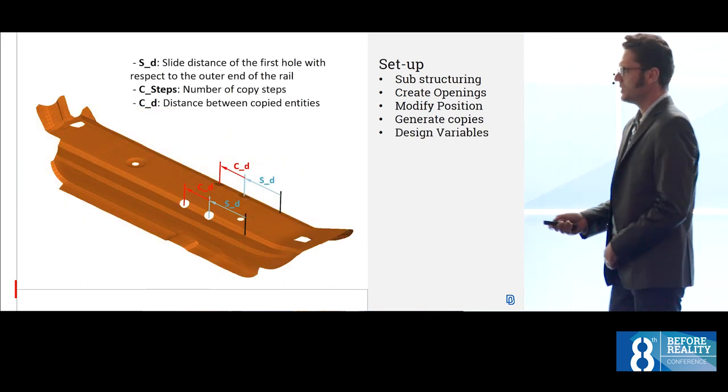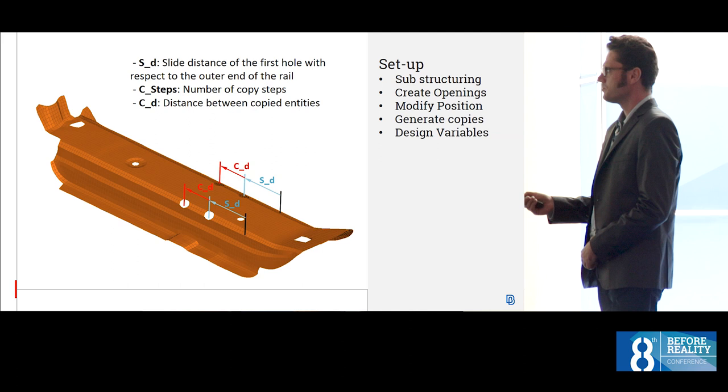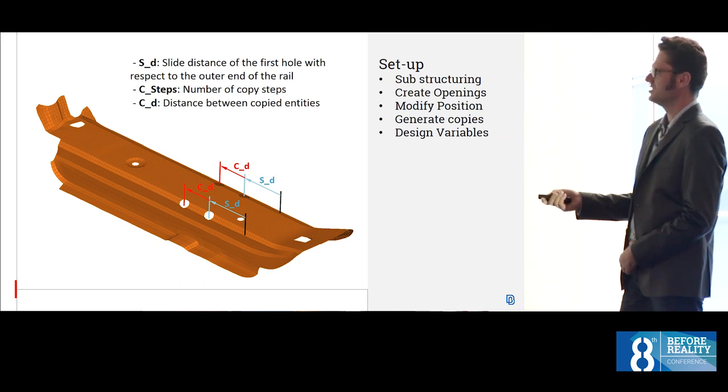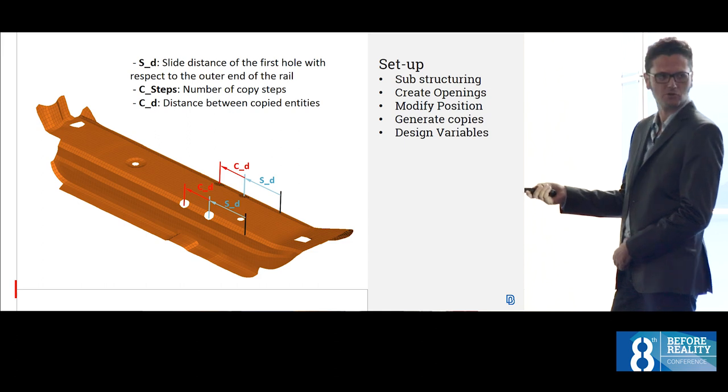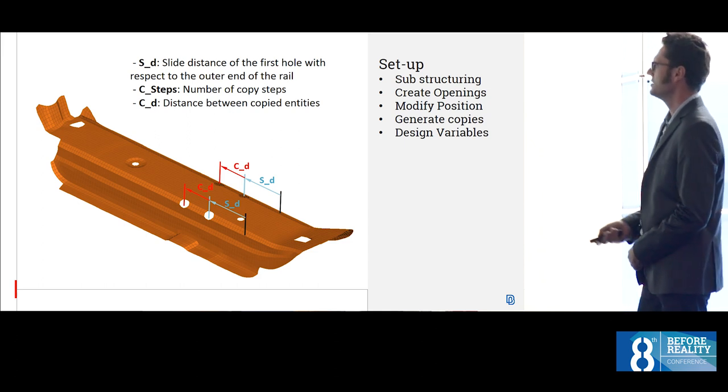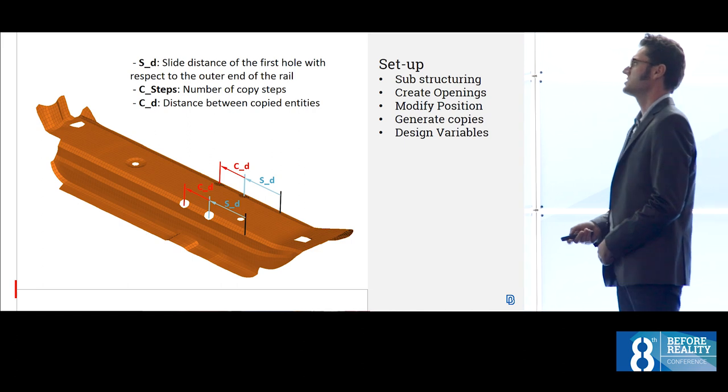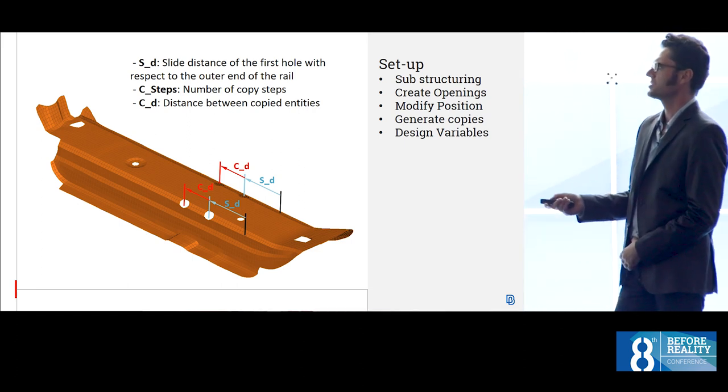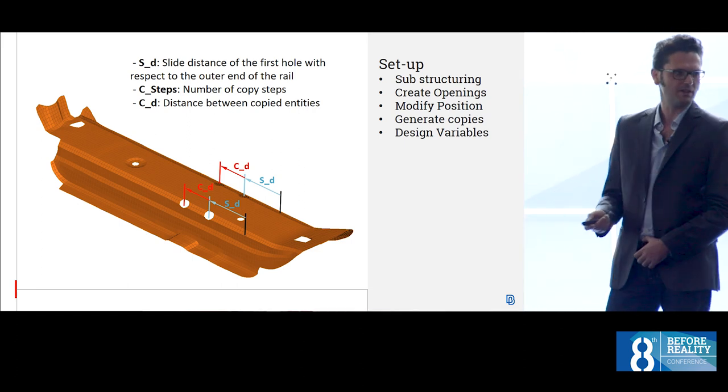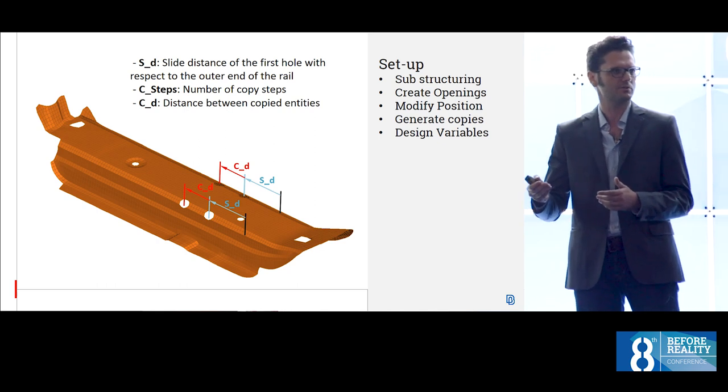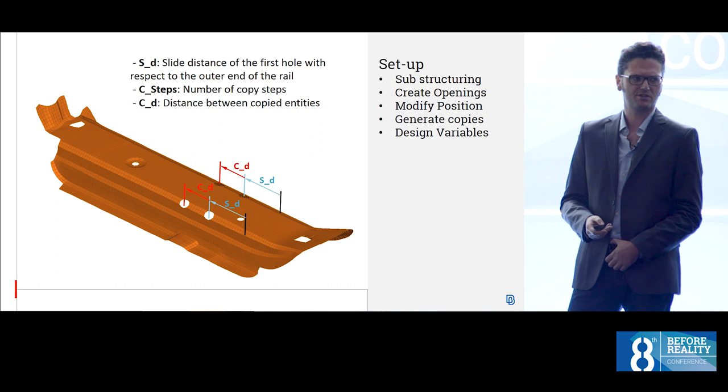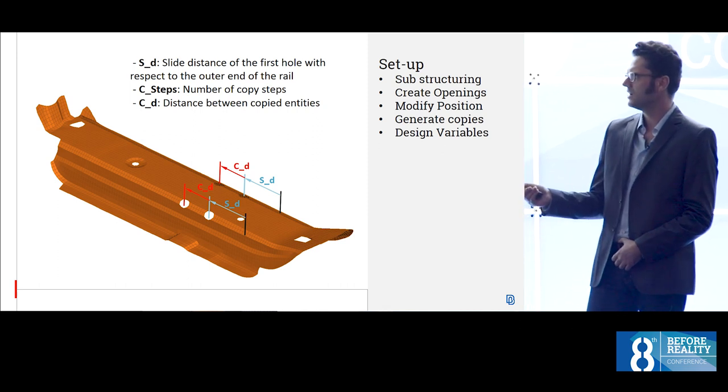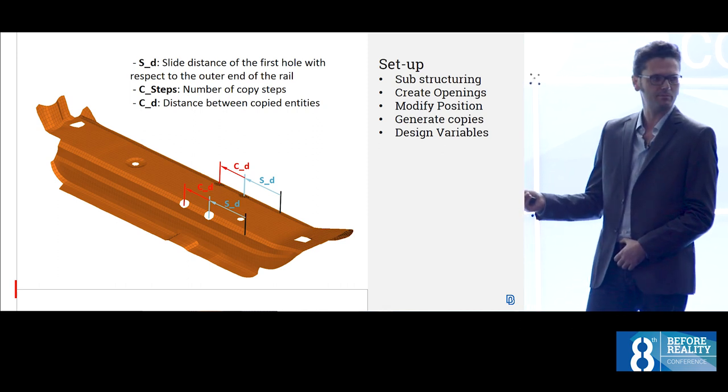The design variables that we applied were three. One was the distance between the first opening and the outermost position that was right there. The second variable was how many of these openings, how many copies actually, we wanted to generate. I think we used up to three copies for the real scenario.